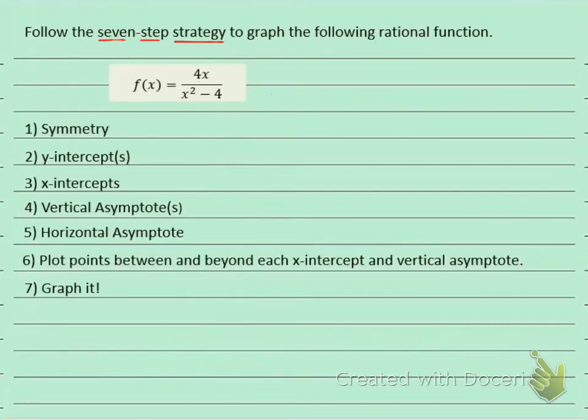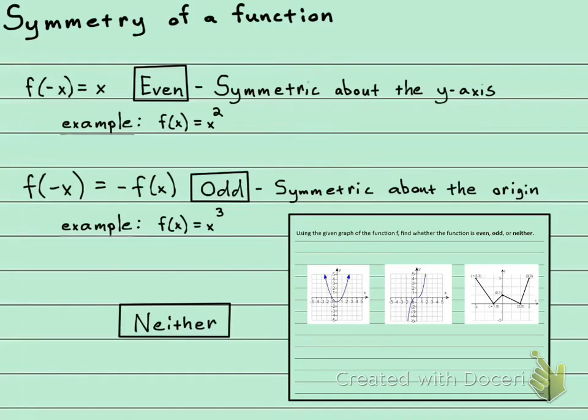We want to graph a rational function, and to graph a rational function we're going to follow the seven-step strategy. The first step is symmetry, so let's take a look back and remind you about symmetry.